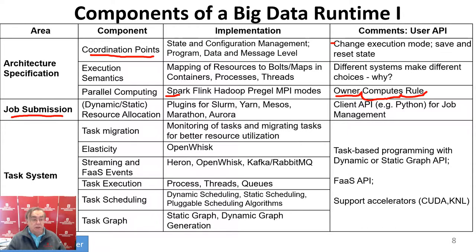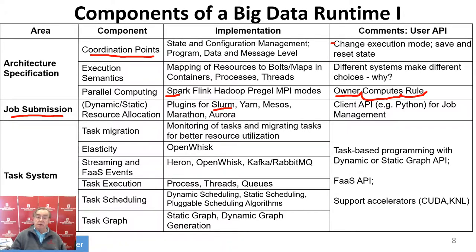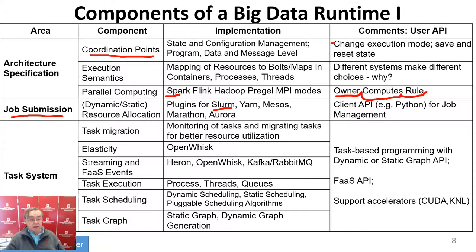We have job submission with various technologies: Slurm, Yarn, Mesos, Marathon, Aurora. The last four are all Apache-type job submission technologies. You can take Python and have your client API be Python, and it can invoke these plugins. The typical architecture is to have the user sitting on a client running Python. That Python is not actually doing the computing — it's invoking the computing. It's a proxy to the computing. That's a very important idea. People think some things are very inefficient — they're not, because these slow technologies like Python are not used to do the job; they're the logic that invokes the job.